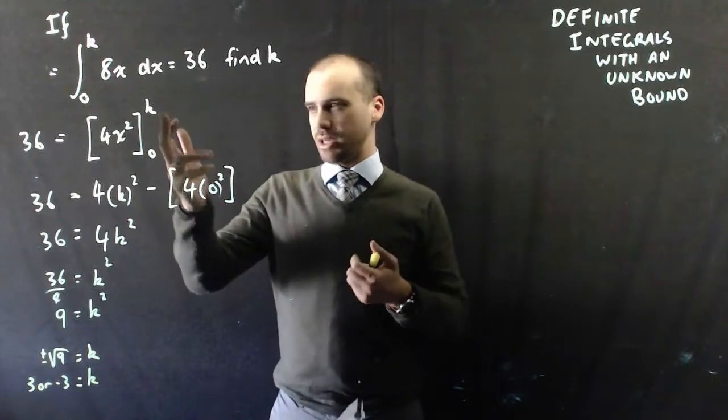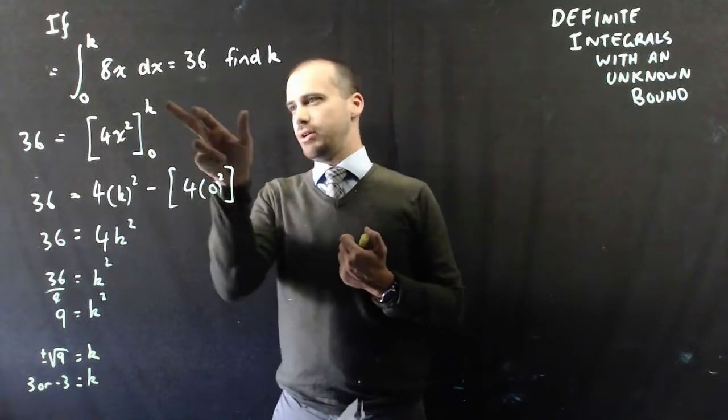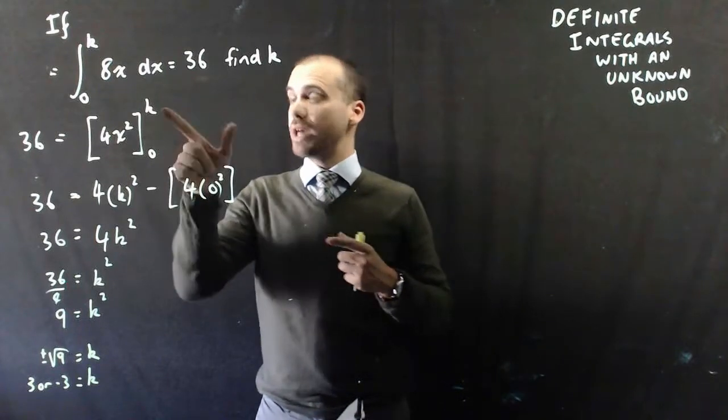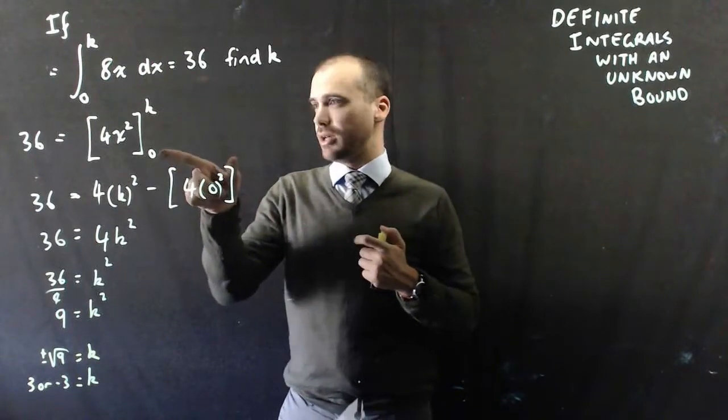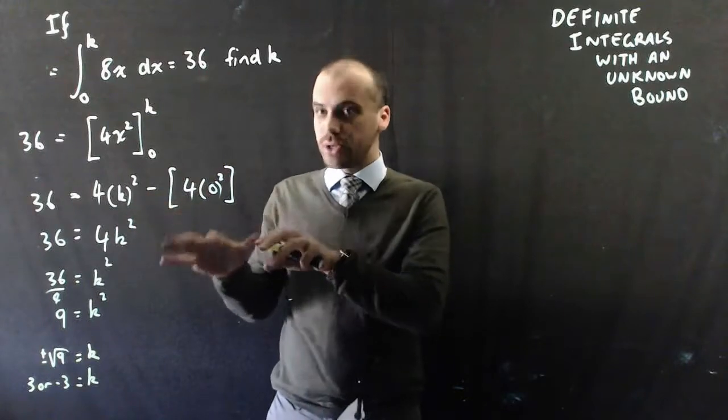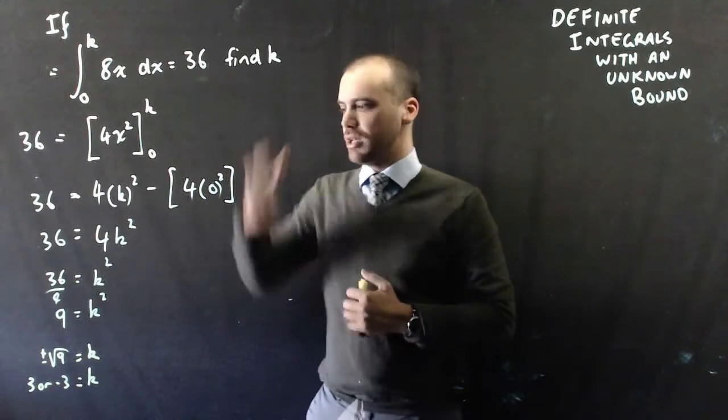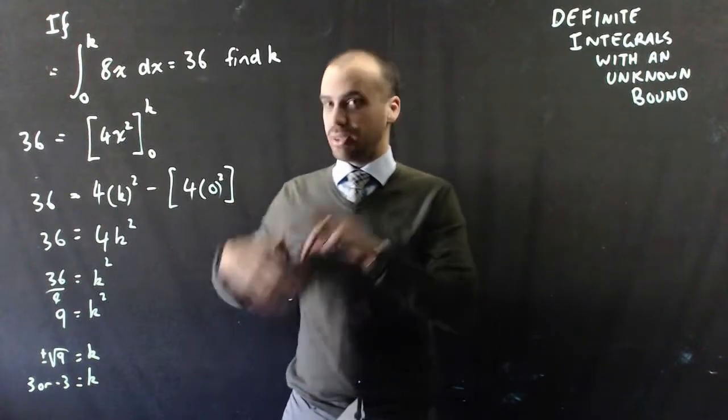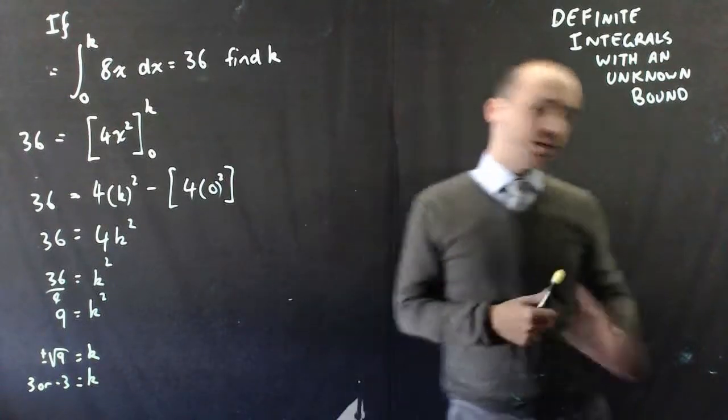Instead of the k being there, the k could be there and a number could be there. There could be like 2k here and k here, and then you'd have to solve some sort of quadratic. So there are a lot of different permutations of this kind of question. But there's our basic idea of how to solve something like that.